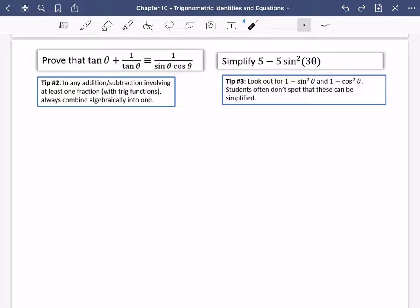Now here's the second tip. If there's any addition or subtraction involving at least one fraction with trig functions like we've got here, always combine them algebraically into one. Now the reason that we do that, it is much easier when you have got two things here. It's much easier to add them together than it is to take this one and to try and split it apart. Like I said before, this is the messier side. I would say that this is the kind of messier looking side. If I want to tidy that up, all I'm going to do is just add them together.